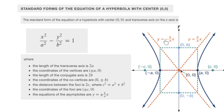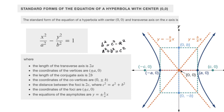Here, a is the distance from the center to the vertex, and b is the distance from the center to one of the co-vertices. The length of the transverse axis is 2a and the length of the conjugate axis is 2b. The coordinates of the vertices are (±a, 0) and the coordinates of the co-vertices are (0, ±b). Since b² = c² - a², adding a² to both sides gives c² = a² + b², so we can find c by adding a² and b² and taking the square root. With this standard equation, the transverse axis is on the x-axis, and it does not matter whether a is bigger or b is bigger.